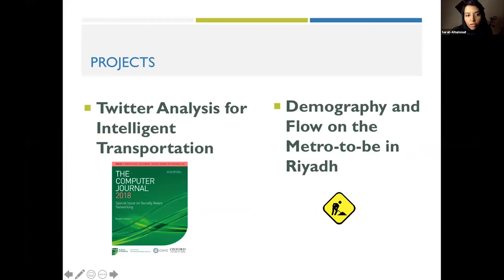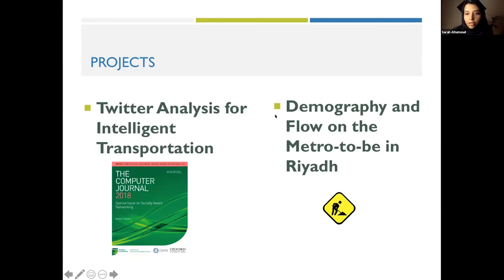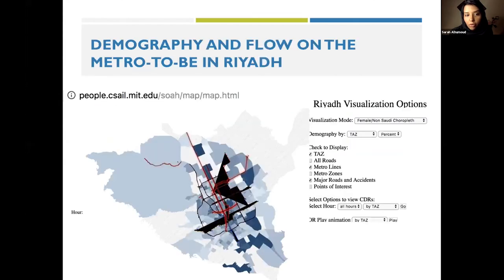I worked on two research projects. The first was Twitter analysis for intelligent transportation, which was published in a computer science journal in 2018. The second was a demographic flow study around the Metro in Riyadh — a project to study the flow and capacity of people around Metro stations to decide the best areas for feeder buses. We used CDR, or call data records from STC, to visualize capacity of people around the 85 Metro stations in Riyadh. That project is still in process and I expect it to be published in 2021.